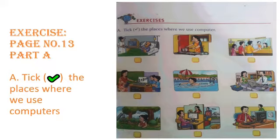Let's start. The first picture is of a hospital. Do we use computers in a hospital? Yes, we do. Please put a tick in the box. The next picture is of a kitchen. Do we use computers in the kitchen? No, we don't. So please put a cross. The next picture is of a railway station. Do we use computers in railway stations? Yes, we do. In this way, you have to complete the whole exercise.